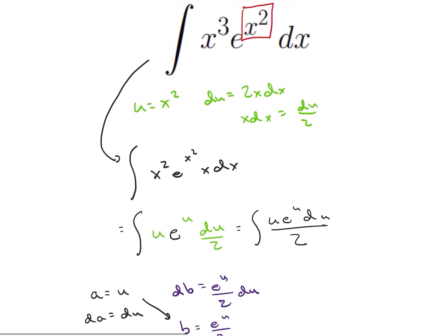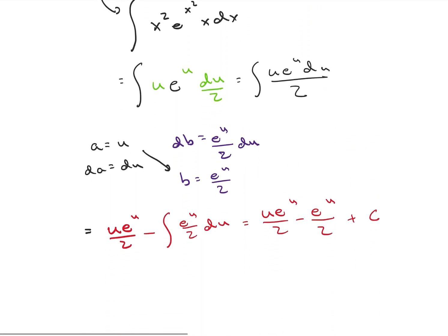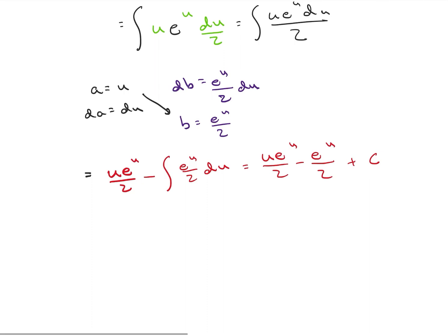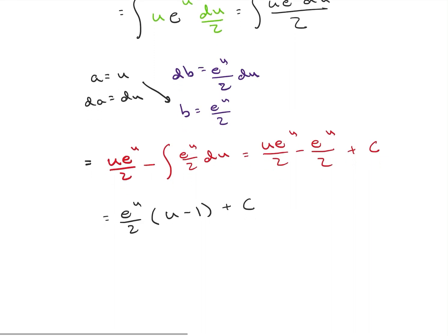What was u? So u was x squared. So I'm going to rewrite this now. We're going to have e to the u over 2 times u minus 1 plus c. And then we can plug that x squared back in.